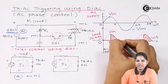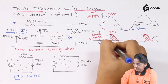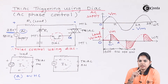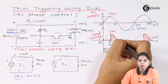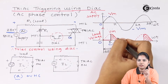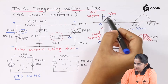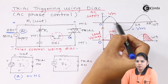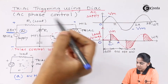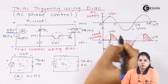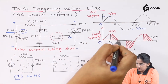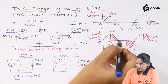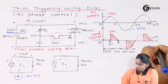Alpha is the phase angle — the time taken for the DIAC to turn on so that gate current is provided to the TRIAC. For example, if the firing angle alpha is 90 degrees (half of the 0 to 180-degree range), then you get load voltage across the load resistance for that portion. As the input voltage decreases and drops to zero at ωt = π, the TRIAC turns off and the output voltage also goes to zero.